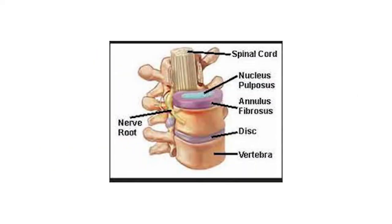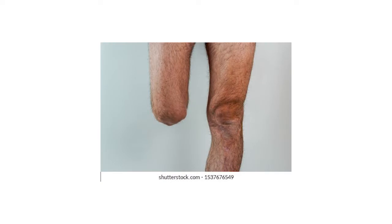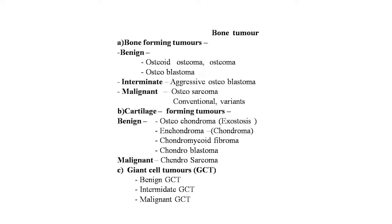In this lecture we will cover bone tumors, prolapsed intervertebral disc, rheumatoid arthritis, and amputations. Bone-forming tumors are classified as benign, intermediate, and malignant. Benign types include osteoid osteoma, osteoma, and osteoblastoma. Malignant bone-forming tumors include osteosarcoma. Cartilaginous tumors include osteochondroma, enchondroma, chondromyxoid fibroma, and chondroblastoma. Malignant cartilaginous tumors include chondrosarcoma. Giant cell tumors (GCT) may be benign, intermediate, or malignant.